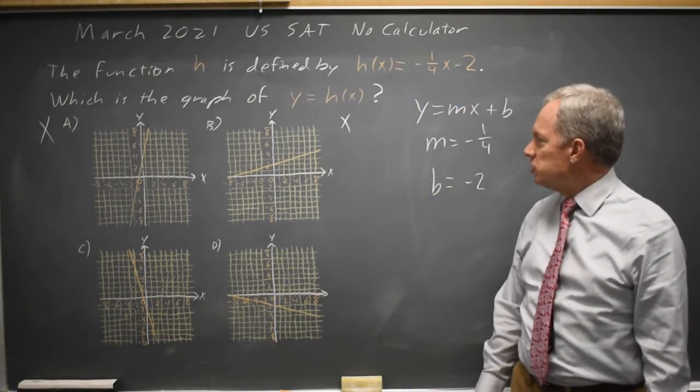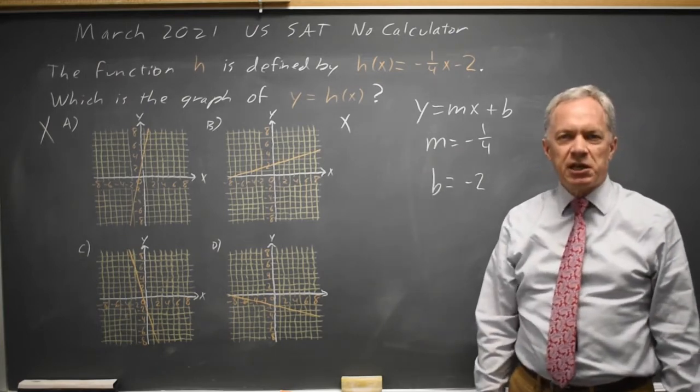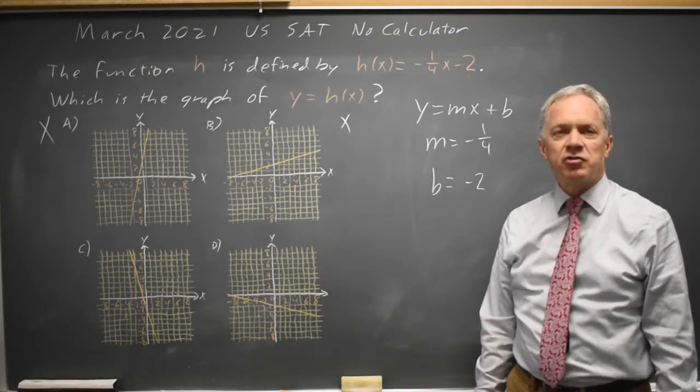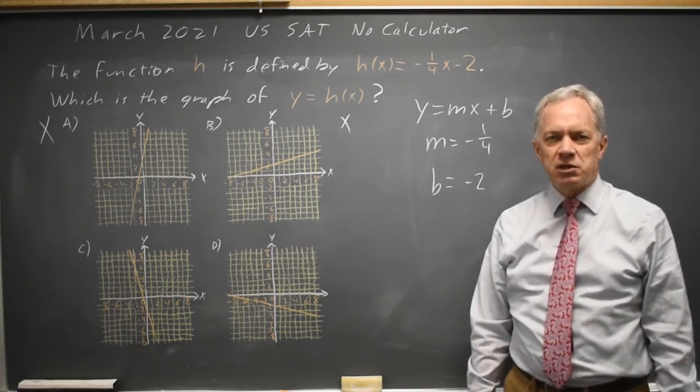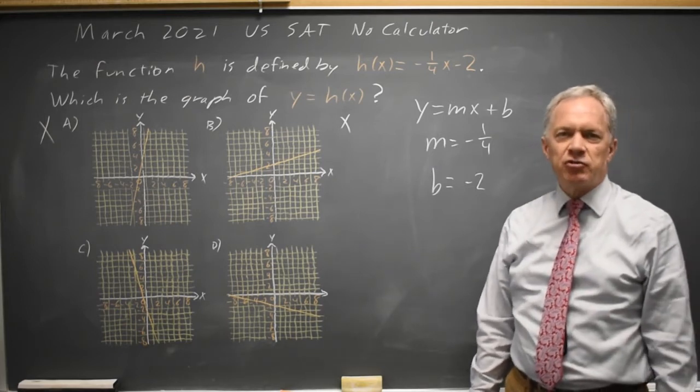So it's one of those two. Now the question is slope. The correct slope will be negative one-fourth, meaning a negative slope. Those are both negative and you go down one square every time you go four squares to the right. You go down one unit every time you go four units to the right.